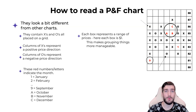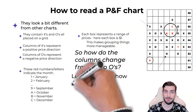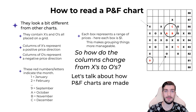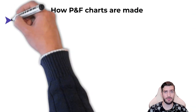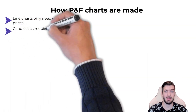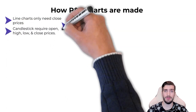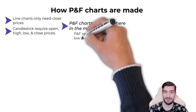Now let's talk about how we go from a column of X's to a column of O's, or O's to X's, and how point and figure charts are actually made. Line charts only need close prices, whereas candlestick charts need open, high, low, and close prices. Point and figure sits somewhere in the middle — to make a point and figure chart, we need the close price, the high price, and the low price.